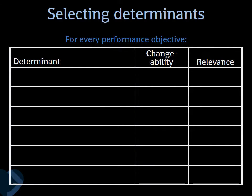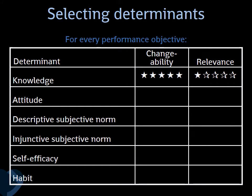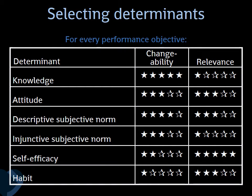Then you determine which determinants to target, because you usually have limited resources and can't target everything. The question of how to differentiate between closely related determinants like self-efficacy and skills is important. Basically, determinants don't exist as absolute realities — we have theories that say it's useful to lump together certain thoughts and call them self-efficacy, and other theories distinguish skills separately.